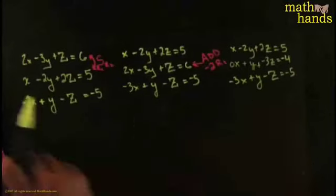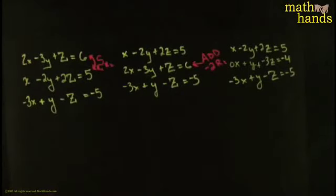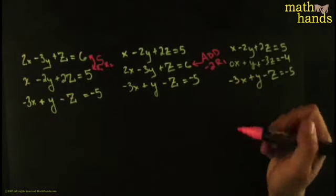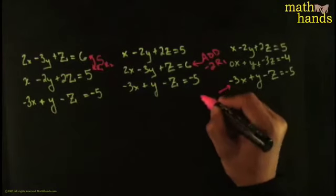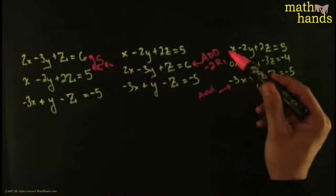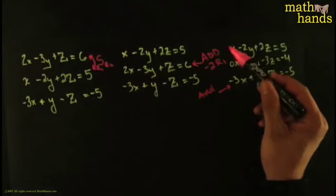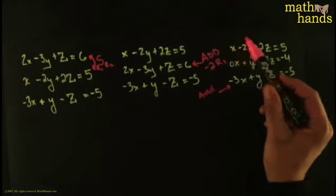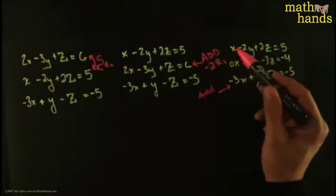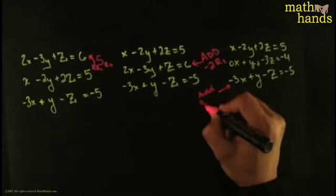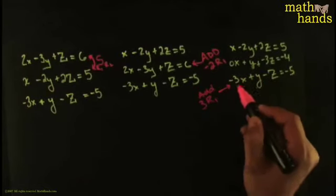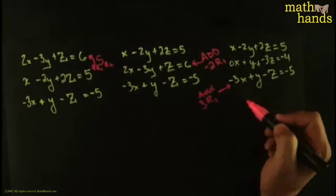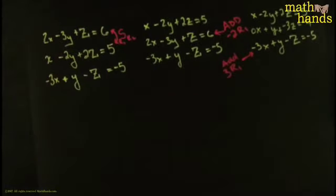Now I need to kill the -3x in the last equation. I'll add 3 times row 1 to row 3. The first two equations don't change. For row 3: 3x + (-3x) = 0, 3×(-2y) = -6y plus 1y = -5y, 3×2z = 6z plus (-z) = 5z, 3×5 = 15 plus (-5) = 10. So the last row becomes: -5y + 5z = 10. The x-terms are all gone from below the pivot.